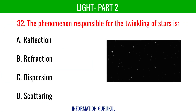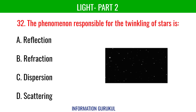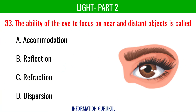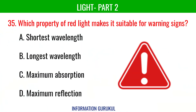The phenomenon responsible for the twinkling of stars is refraction. The ability of the eye to focus on near and distant objects is called accommodation. Why is red color used for danger signals? It is scattered the least and visible from far distances. Which property of red light makes it suitable for warning signs? Its longest wavelength.